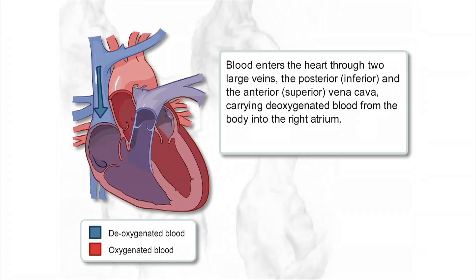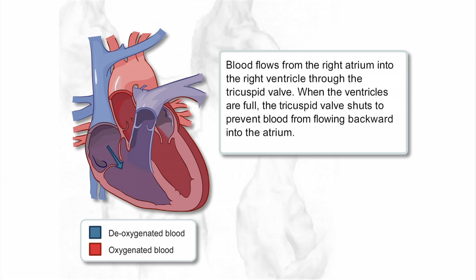Blood enters the heart through two large veins, the posterior and the anterior, carrying deoxygenated blood from the body into the right atrium. Blood flows from the right atrium into the right ventricle through the tricuspid valve.